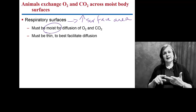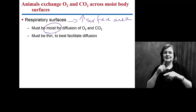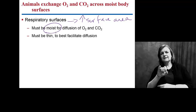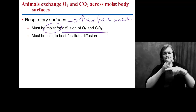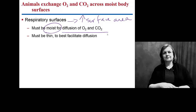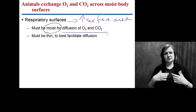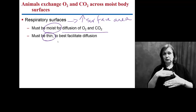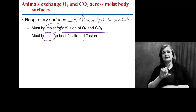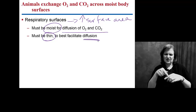We also look at the fact that respiratory surfaces must be moist. If your lungs are not moist and get dried out, it becomes very difficult to diffuse oxygen and carbon dioxide. If you've ever been in a very dry environment, you know it can be very difficult to breathe. Respiratory surfaces also have to be very thin — this is really a diffusion aspect. If you had thick lung tissue, you wouldn't be able to diffuse things through very easily.